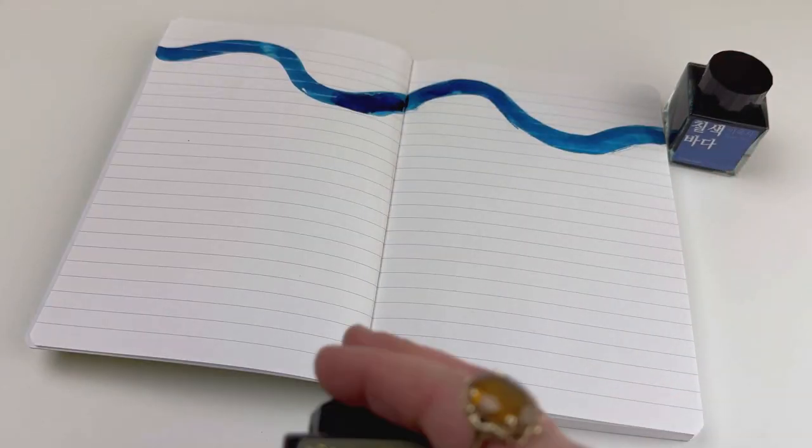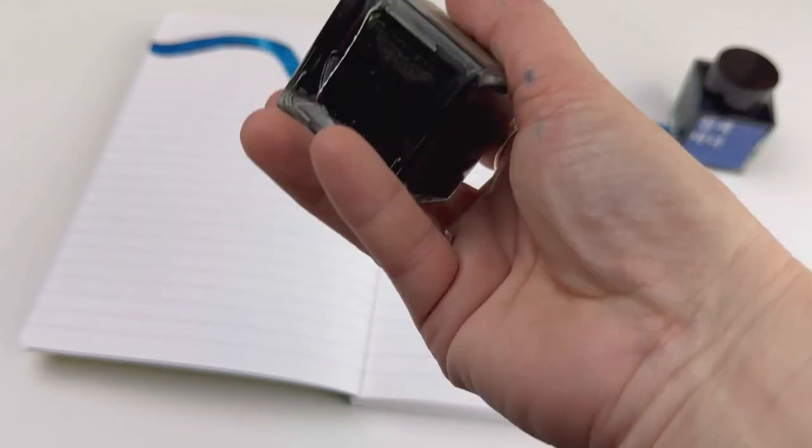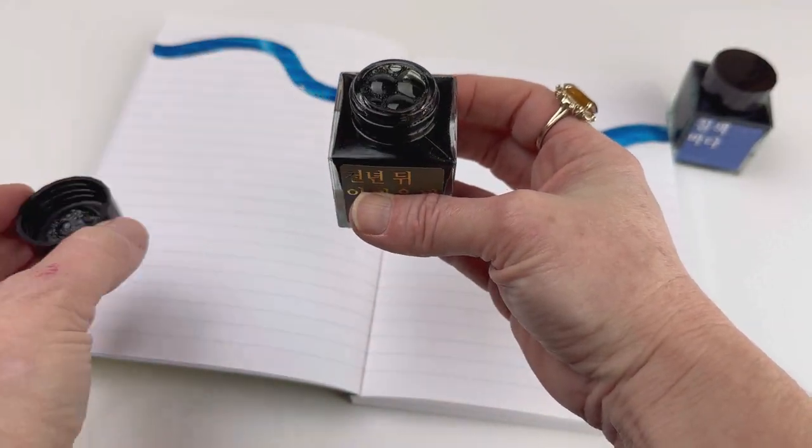This first ink that I put down was Seven Colored Ocean. These are all 30 milliliter square glass heavy-weighted ink bottles. I really like the Waringel ink bottles. They're easy to get into and out of and they close really firmly. I've never had one leak on me.